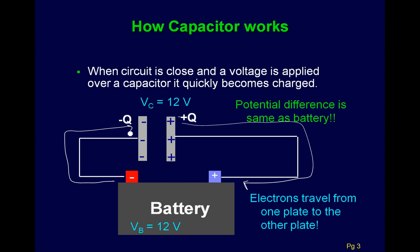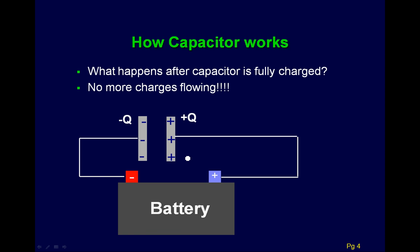An important thing here is that the potential difference will always be the same in this case. If I'm one of these electrons, I'm going to keep going over to the positive side until the potential over there is the same as over here — say 12 volts on both sides. When it's the same potential, there's no reason for electrons to transfer back and forth anymore. Once it's fully charged, there's no more current.